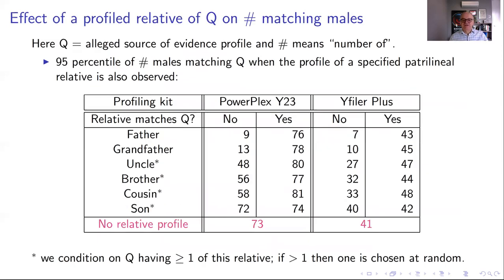In our first talk, we presented the idea of how many males match the observed profile. One of the results was that for PowerPlex Y23 and Y-Filer Plus, the 95th percentile of the distribution of the number of males matching an alleged contributor Q was 73, and for Y-Filer Plus, which has a higher mutation rate and therefore fewer matches, it was 41. That 95th percentile acts as something like an upper bound on the number of matching males.